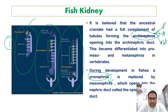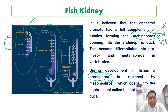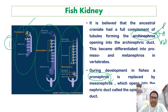The metanephros arises caudal to the mesonephros at 5 weeks of development and is the permanent, functional kidney in higher vertebrates. It is derived from the intermediate mesoderm. The ureteric bud arises as a diverticulum from the Wolffian duct, close to the entrance to the cloaca, and grows towards and inside the metanephric mesenchyme.